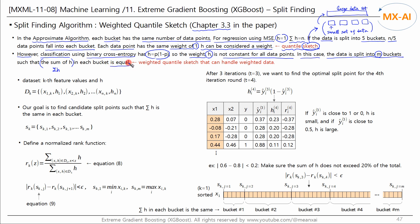This is the weighted quantile sketch algorithm. It can handle weighted data. We have weighted data as shown below. k is the feature number, and x are the k-th feature values. And h is the weight for each data point.